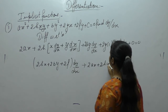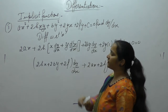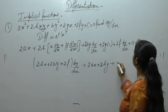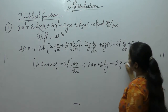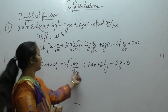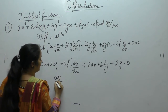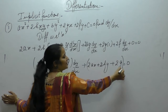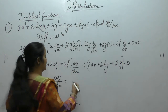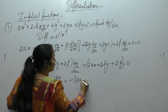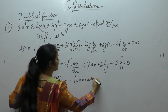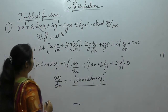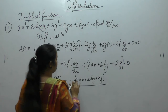We get 2ax + 2hy + 2g = 0. Moving the remaining terms to the right-hand side, the sign will change: dy/dx = −(2ax + 2hy + 2g) / (2hx + 2by + 2f). Taking 2 common from numerator and denominator, dy/dx = −(ax + hy + g) / (hx + by + f).